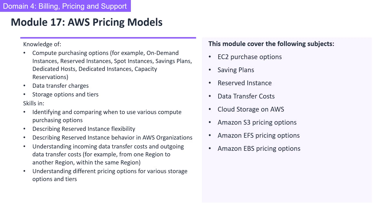Welcome to Module 17, AWS Pricing Models. In this module, we will cover the following subjects: EC2 purchasing options such as on-demand instances, reserved instances, spot instances, savings plans, dedicated hosts, dedicated instances, and capacity reservations. Incoming and outgoing data transfer costs, and different pricing options for various storage options and tiers. Let's get started.